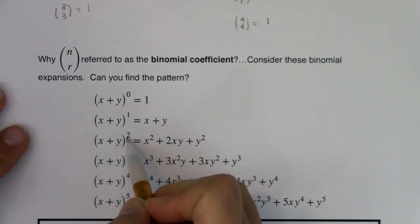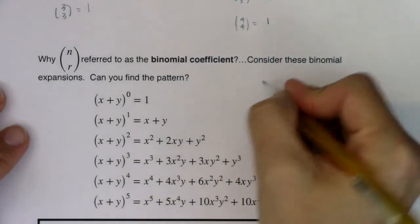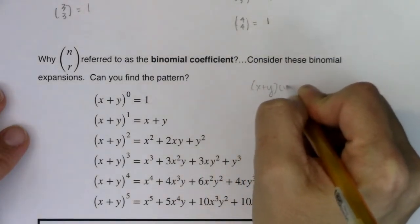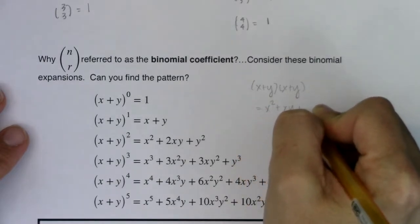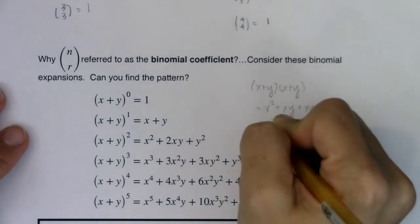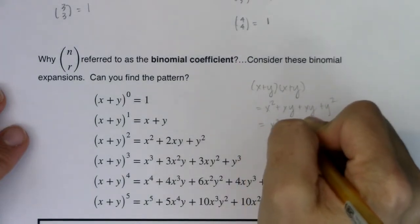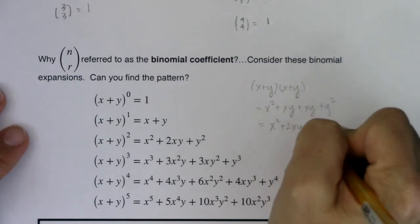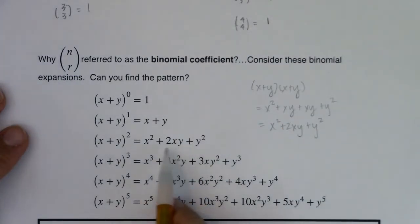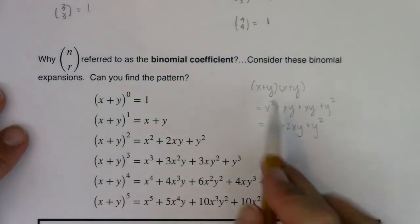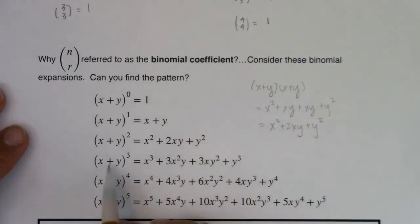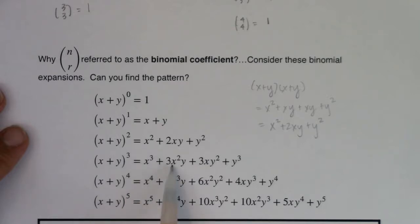Think of x plus y squared. If I did x plus y times x plus y, you would tell me that was first, outer, inner, last — FOIL. If I simplified that, I would get x squared plus 2xy plus y squared, and you see it happening right here. Now look at x plus y cubed. I foiled this out and then multiplied again by x plus y. If I collected all the like terms, it was x cubed plus 3x²y plus 3xy² plus y cubed.